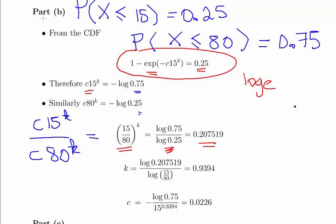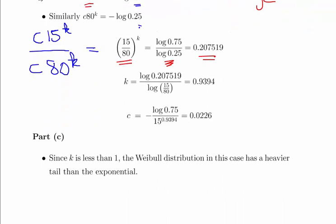Now this is where the law of logarithms comes in very handy. Just recall that the log of A to the power of K can be written as K times log of A. So that's what happens here.